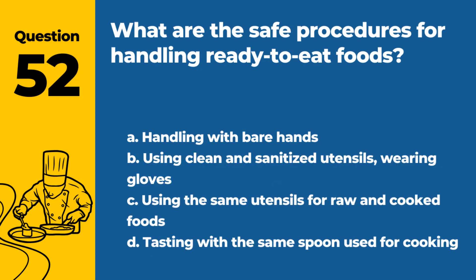Question 52. What are the safe procedures for handling ready-to-eat foods? A. Handling with bare hands. B. Using clean and sanitized utensils, wearing gloves. C. Using the same utensils for raw and cooked foods. D. Tasting with the same spoon used for cooking. Answer: B. Using clean and sanitized utensils, wearing gloves. Safe procedures for handling ready-to-eat foods include using clean and sanitized utensils and wearing gloves to prevent contamination.